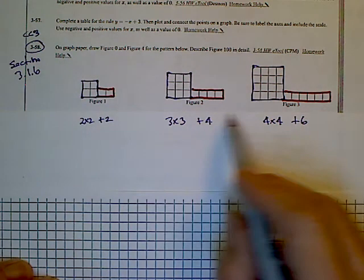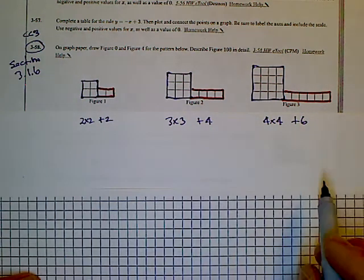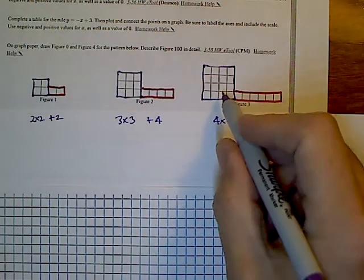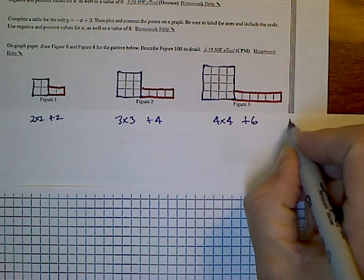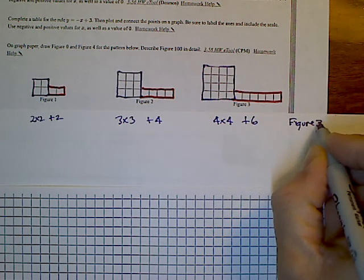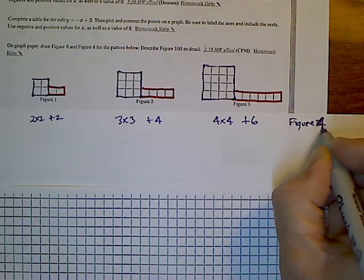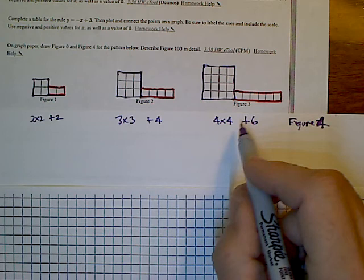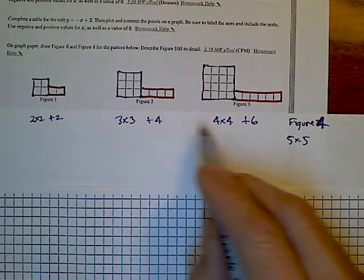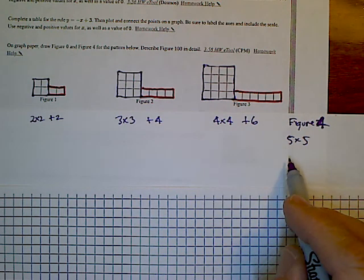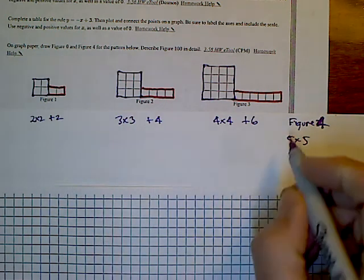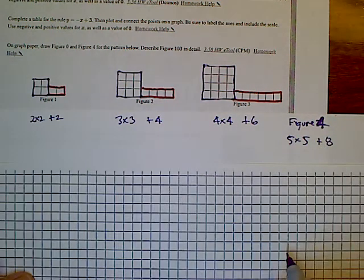So that might help as we think about what then would figure four look like? Based on this pattern, I'm going to predict that figure four is going to have a five by five. And then if I look at, so I went two by two to three by three to four by four. So figure four is going to be a five by five. And if I look at the additional row, it's two, four, six. So it's going to be plus eight.